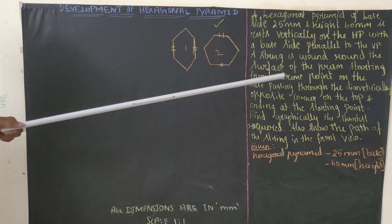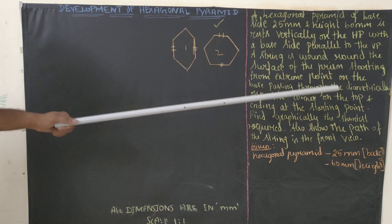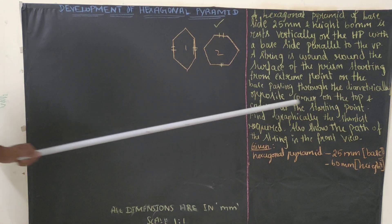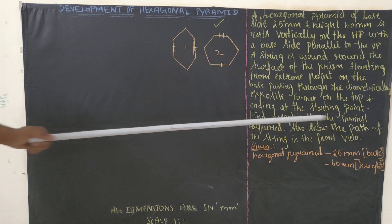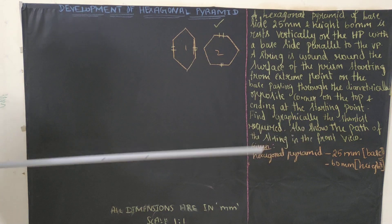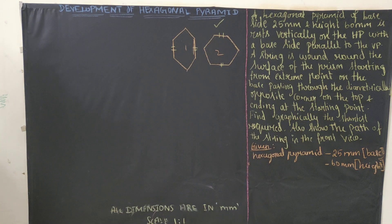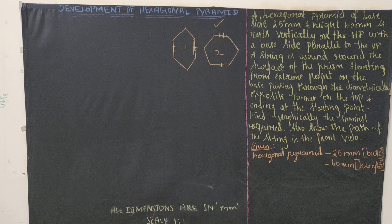A string is wound around the surface of the pyramid, starting from the left extreme point on the base, passing through the diametrically opposite corner on the top, and ending at the starting point. Find graphically the shortest distance required and also trace the path of the string in the front view. So we will go with this type of hexagon and draw the top view and front view.